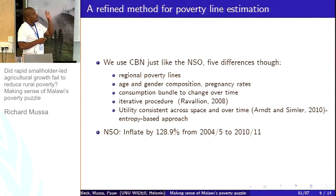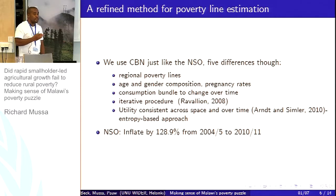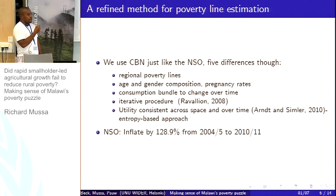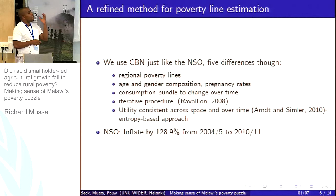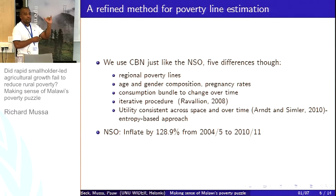First, we calculate region-specific poverty lines, whereas the official analysis uses just one national poverty line. In computing food poverty lines using calories, which vary with age, gender, and pregnancy status, we take all these into account. The official analysis only focuses on age — it does not account for gender differences or pregnancy differences. That's another dimension we introduce.